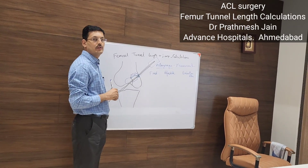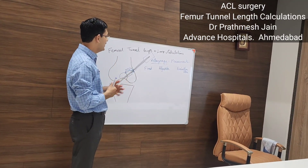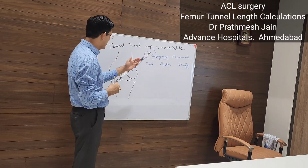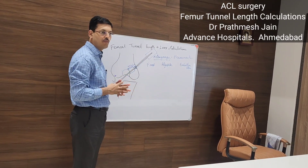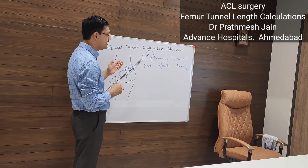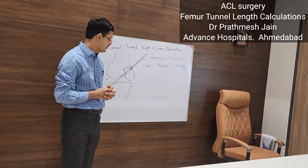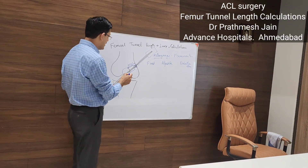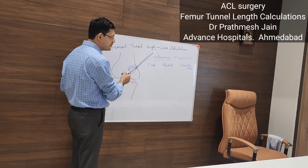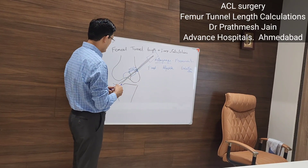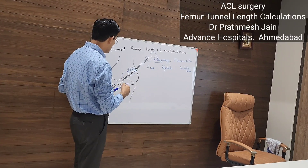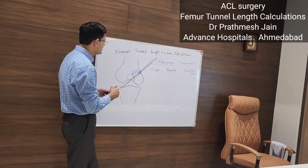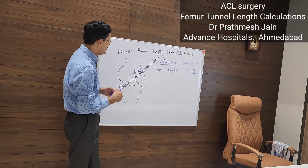Today we are discussing femoral tunnel length and loop calculations in ACL surgery — how we calculate the length of the loops and how we drill the femoral tunnel. The femoral tunnel must be drilled at the anatomical location, at the origin or insertion of the ACL. I recommend using a marked bead pin with a pointer, called the retro watch system.